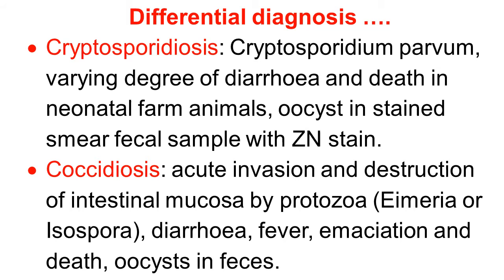Several protozoal diseases — Cryptosporidiosis and Coccidiosis — also cause severe diarrhea. Cryptosporidiosis is caused by Cryptosporidium parvum. It causes varying degrees of diarrhea and even death in neonates. Diagnosis can be achieved by identifying oocysts in stained fecal smears with a general stain, showing clear-cut oocysts of Cryptosporidium.